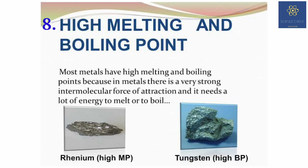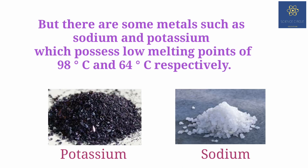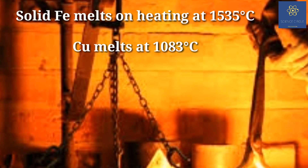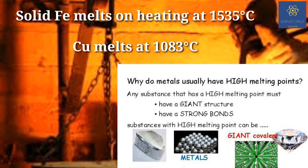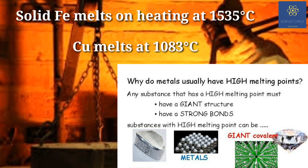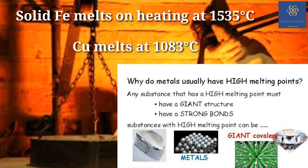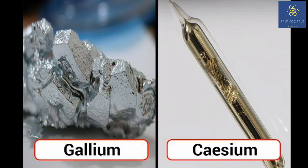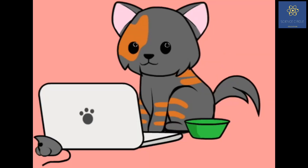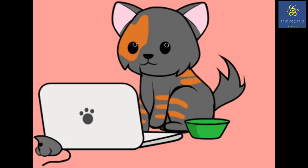Metals generally have high melting and boiling points, though sodium and potassium are exceptions. Solid iron melts into liquid iron at 1535°C, while copper melts at 1083°C. The melting points of gallium and cesium are very low — they can start melting even when held in the hand. There is always diversity in the properties of metals and non-metals.